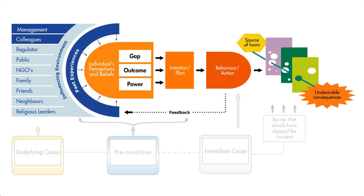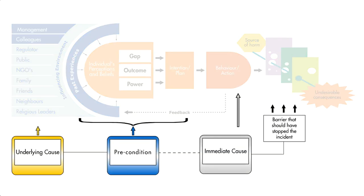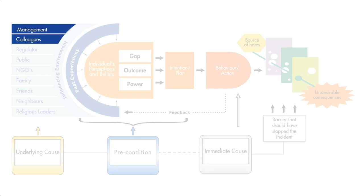Using the human behaviour model with a tripod incident analysis methodology helps to clearly identify both the immediate and underlying causes. It also makes the conclusions more personal because managers and colleagues can see their role in creating the environment that led to the incident.